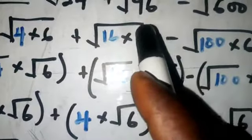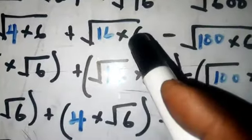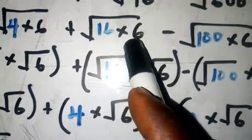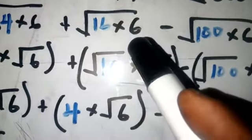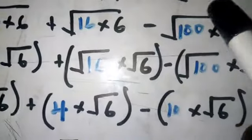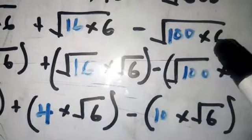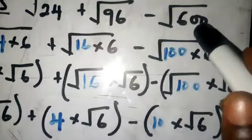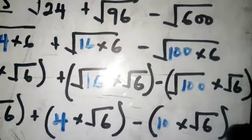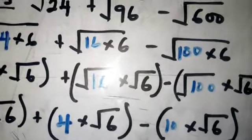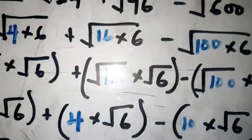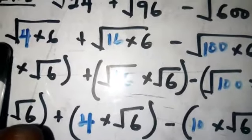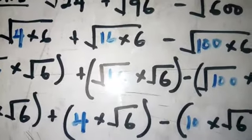We are just splitting each number into two factors, making sure one of them is a perfect square and that the perfect square comes first. So we have root(4×6) plus root(16×6) minus root(100×6). That is a simple law — obey it.